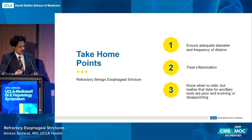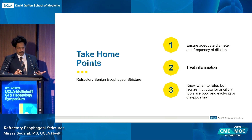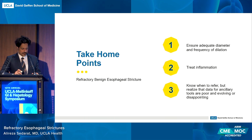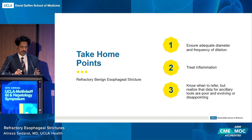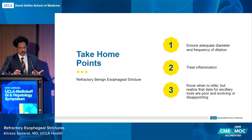Take-home points: ensure that you're achieving adequate diameter and frequency of dilation. Before you call something refractory or recurrent, take a look at the Coachman criteria and try every two weeks to slowly get to roughly 14 millimeters. If those things haven't been achieved, you still have work to do. Treat the inflammation, and know when to refer — but realize that by the time they come to us, we have additional tools whose efficacy is actually not as good as one would like. Often it's just about being appropriately aggressive and frequent with dilation.